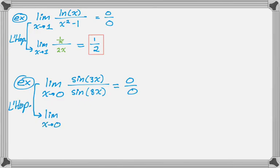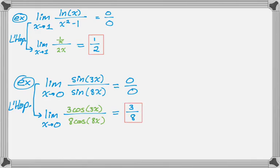Applying L'Hôpital's Rule, it's still the limit as x approaches 0. The derivative of sin(3x) is 3cos(3x) by the chain rule, and that's over the derivative of sin(8x), which is 8cos(8x) — again by the chain rule. Now if I evaluate, cos(0) is 1, so this gives me 3/8. You can see L'Hôpital's Rule is really effective and pretty simple to use.